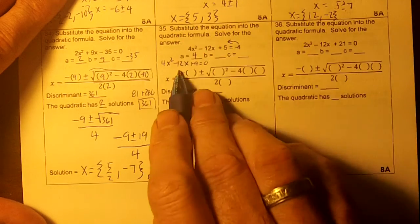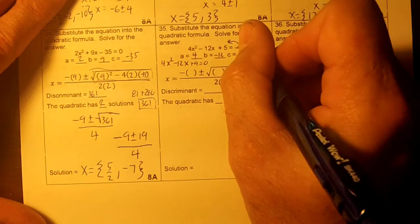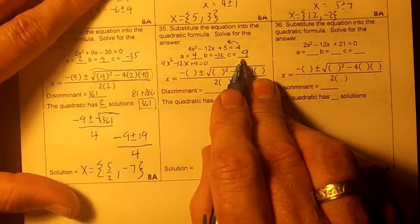So my A is 4, my B is negative 12, and my C is not 5, it's 9, isn't it? So I've got to move this over to get my C term. Make sure you do that on your test.